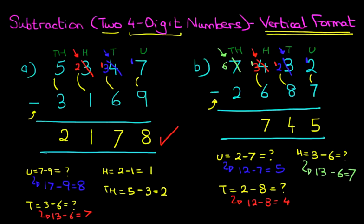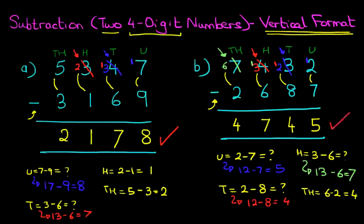And lastly, we've got the thousands column. We have 6 minus 2. That's nice and easy. 6 minus 2 is 4. And that is our answer: 4,745. And it really is quite simple. Just follow the same principles all the way through. So that is subtraction of two four-digit numbers using the vertical format. Thank you so much!